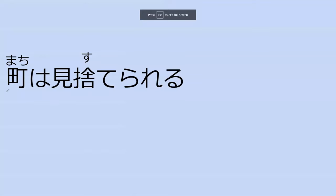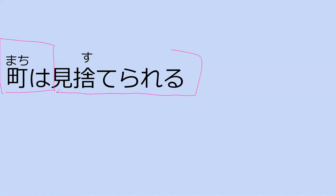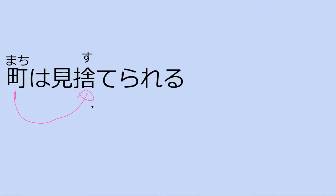Passive form exists in Japanese for sentences like: 'machi wa misuterareru,' meaning the city was forsaken. The city did not do the forsaking. If this were in normal form — 'machi wa misuteru' — it would mean the city forsook something. So rareru form is used when you want to say the city was the one being forsaken.